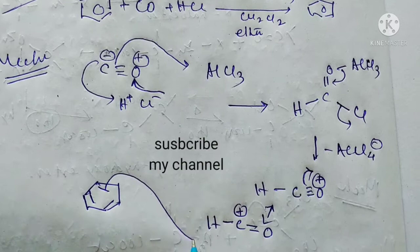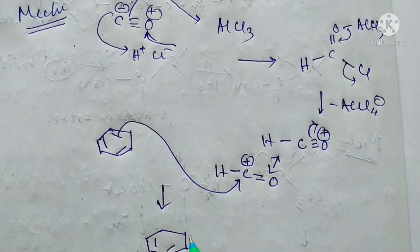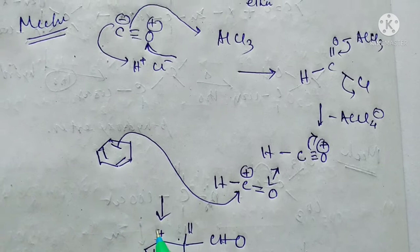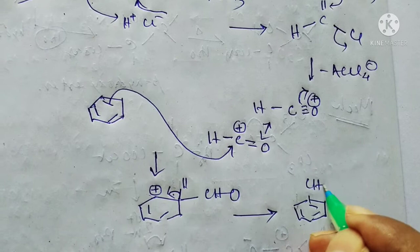Now after attacking the C plus carbon, this benzene will be like this. Now removing this hydrogen will get benzene carbon monoxide as our desired product.